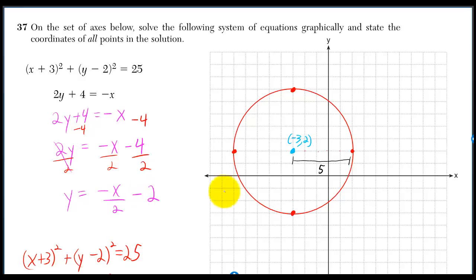This means we have a y-intercept of negative 2 and a slope of negative 1 over 2, which means we go down 1 when we go to the right by 2.